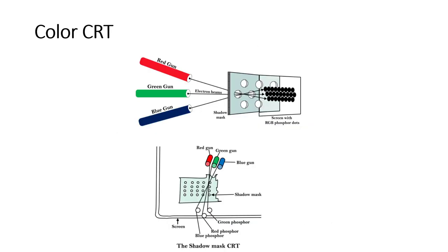This procedure can similarly be applied for a color CRT display. Here three electron beams are deflected and focused as a group onto a shadow mask, which contains a sequence of holes aligned with phosphor dot patterns. The three beams activate a dotted triangle which appears as a small color spot on the screen. Each pixel is defined using three different phosphor dots responsible for red, blue, and green, and their combined effect creates the color for one pixel.